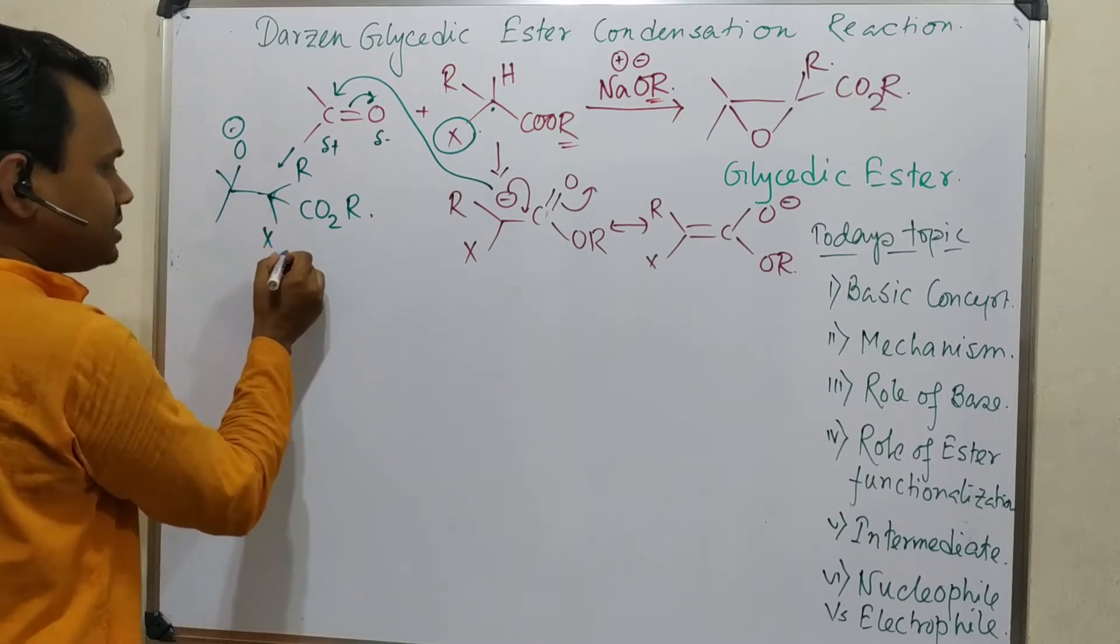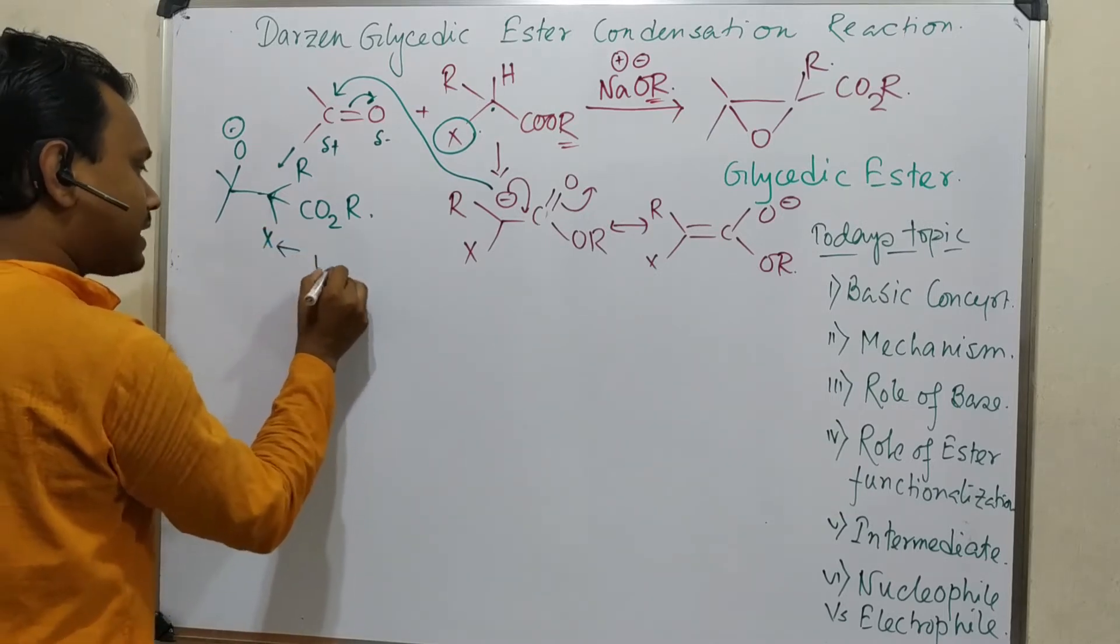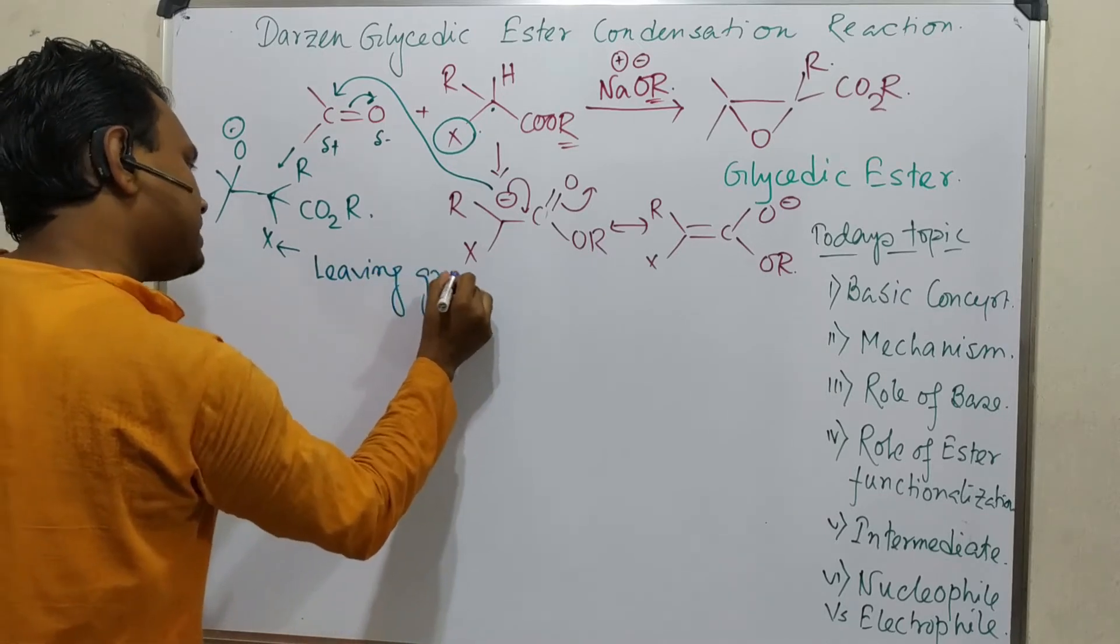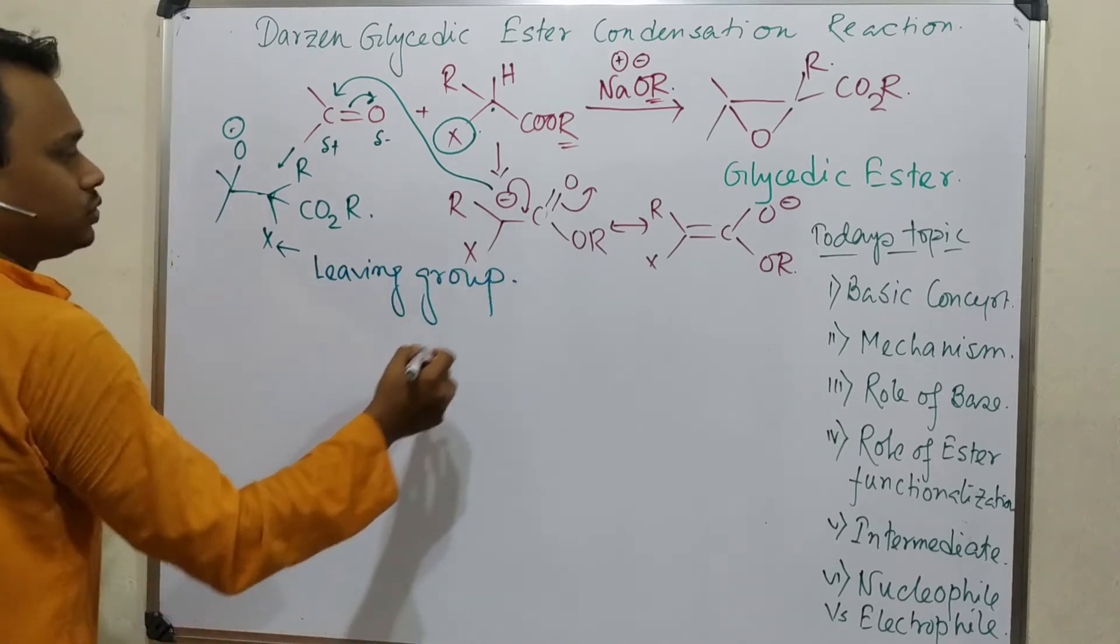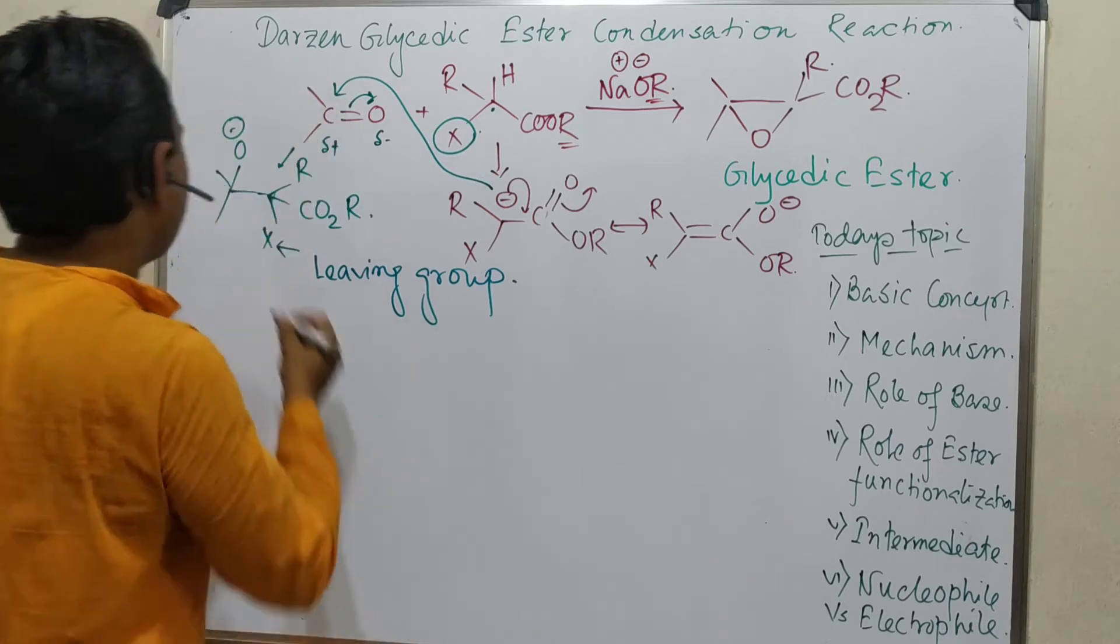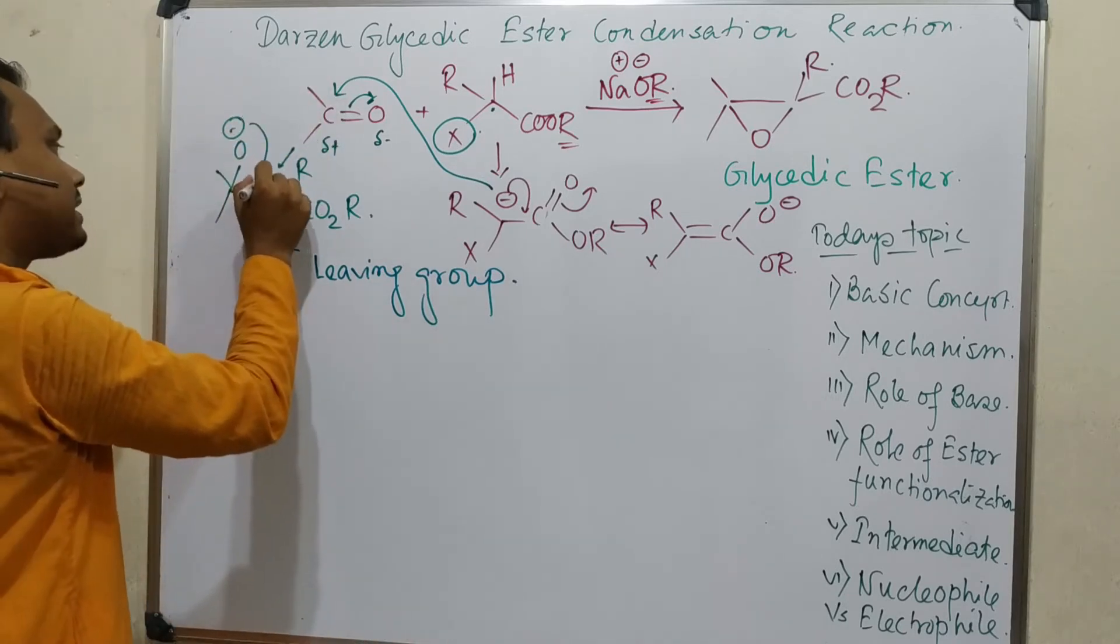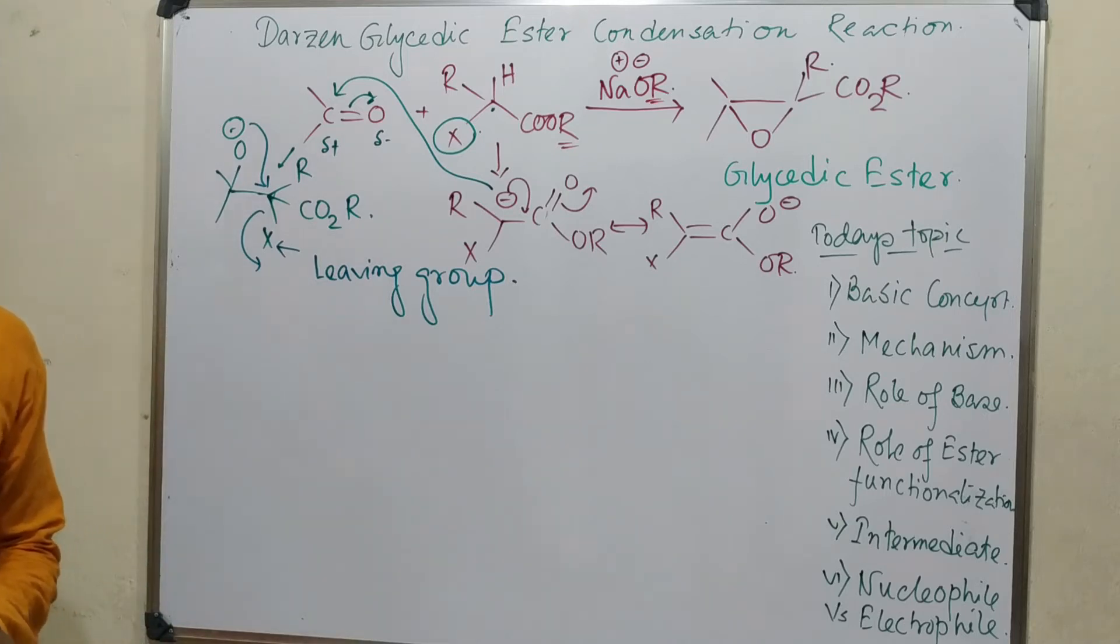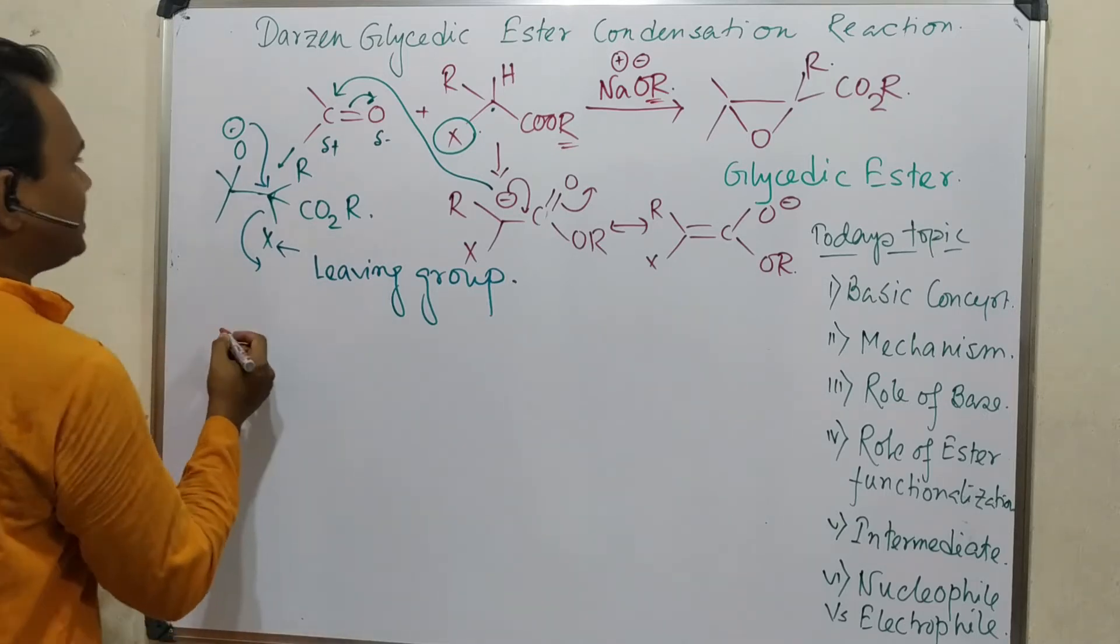Which is - this actually can act as a leaving group. This can act as a good leaving group, for example chloride or bromide. So what can happen? This attacks here and X leaves. So ultimately what does it produce? This produces an epoxide derivative.